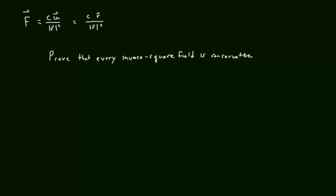Now let's prove that every inverse square field is conservative. Writing it more explicitly: f(x,y,z) = -c times (x,y,z) divided by x squared plus y squared plus z squared to the three-halves power.